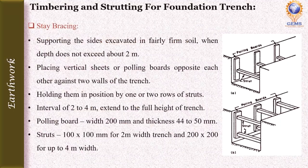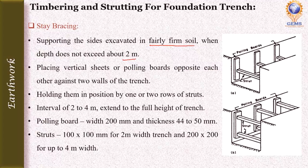The first method is stay brazing. This method is used for supporting the sides of a bench excavated in fairly firm soil when the depth of excavation does not exceed about 2 meters. The soil has some firmness but is not fully hardened. This method consists of placing vertical sheets or pulling boards opposite to each other against the two walls of the trench.